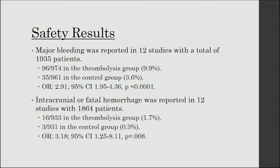Safety outcomes were also assessed in this meta-analysis, specifically major bleeding and intracranial hemorrhage or any fatal hemorrhage. Major bleeding was reported in 12 studies with 1,935 patients: 9.9% in the thrombolytic group versus 3.6% in the control group, with an odds ratio of 2.91, indicating a statistically significant increase in major bleeding with thrombolytic therapy. Intracranial or fatal hemorrhage was reported in 12 studies with 1,864 patients: 1.7% in the thrombolytic group versus 0.3% in the control group, with an odds ratio of 3.18, also indicating a statistically significant increase in this outcome with thrombolytic therapy.